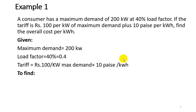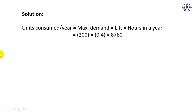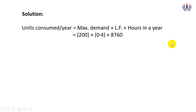To find the solution, first we calculate units consumed per year. That is: load factor × maximum demand × hours in the year. The number of hours in a year is 8760 (24 hours × 365 days). So units consumed per year = 0.4 × 200 × 8760 = 700,800 kilowatt hours.